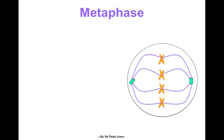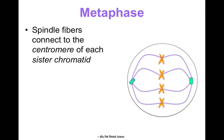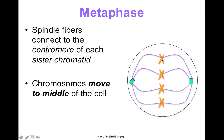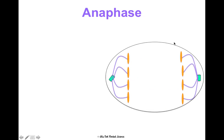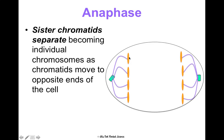In metaphase, the spindle fibers connect to the centromeres of the sister chromatids and move the chromosomes to the middle of the cell, lining them up single file in the middle. In anaphase, we pull the sister chromatids apart — separating the sister chromatids from each other into individual chromosomes or chromatids — and they move to opposite ends, or poles, of the cell.